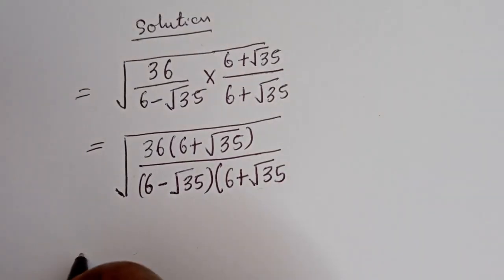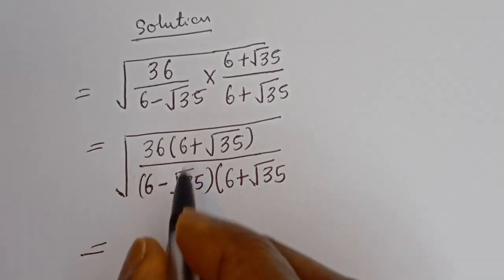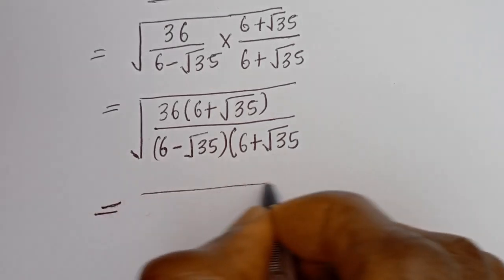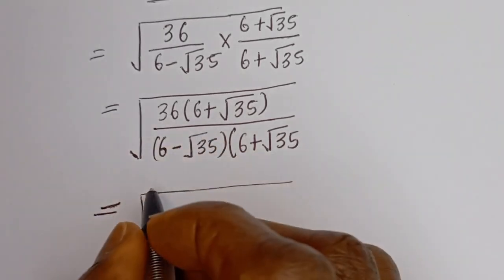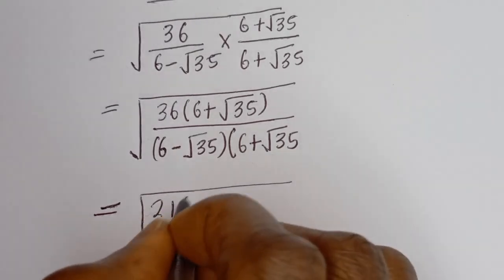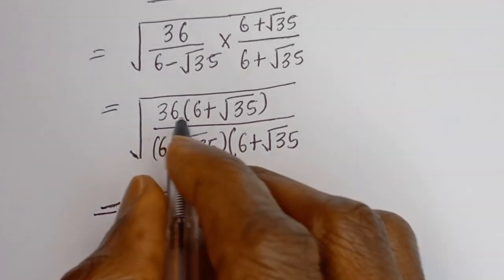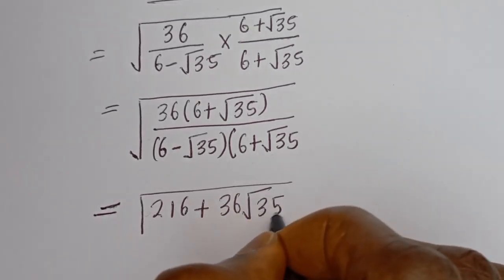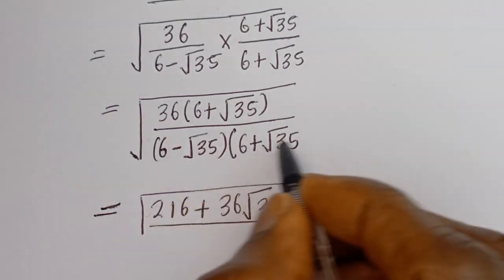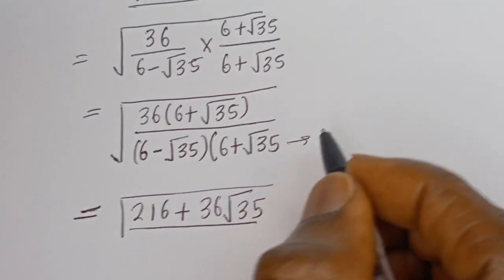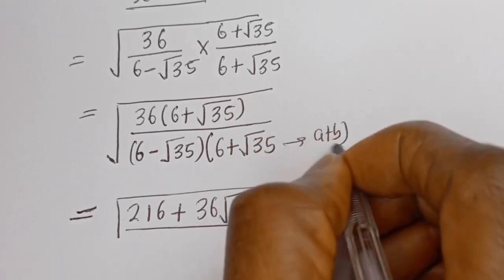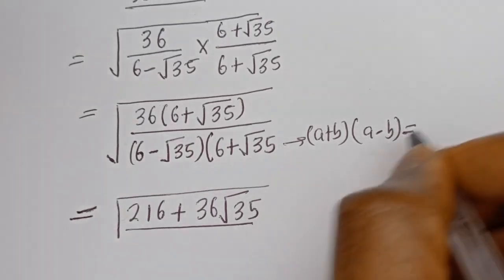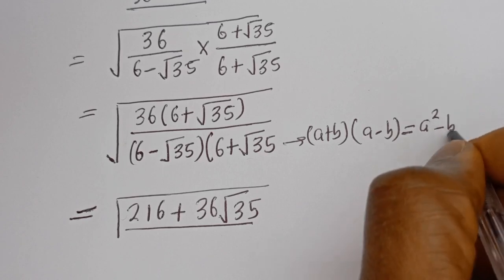Then this is equal to 36 multiplied by 6, that is 216, then plus 36 times square root of 35. The denominator is in the form of (a + b)(a − b), which equals a squared minus b squared.